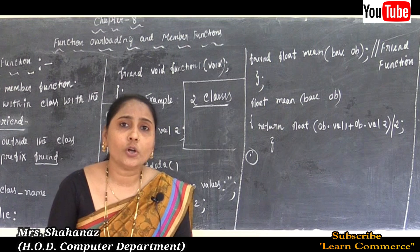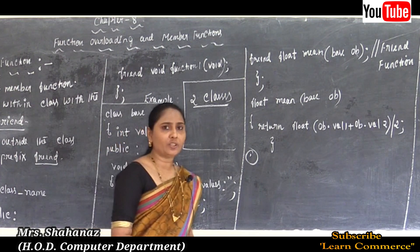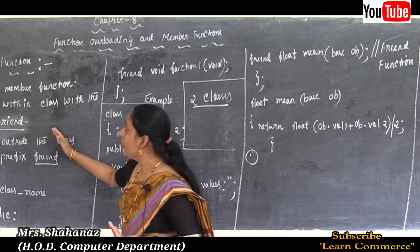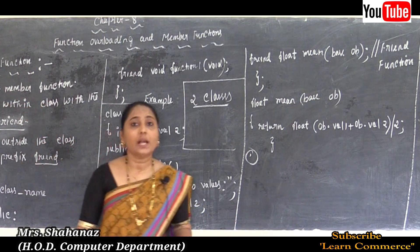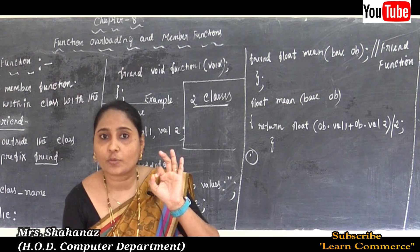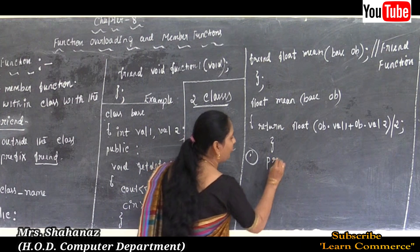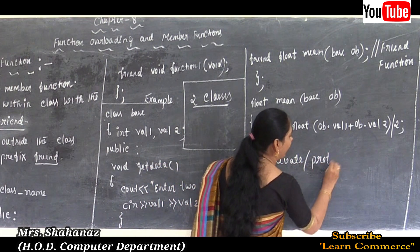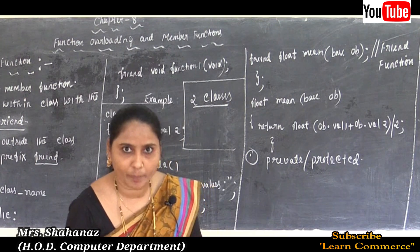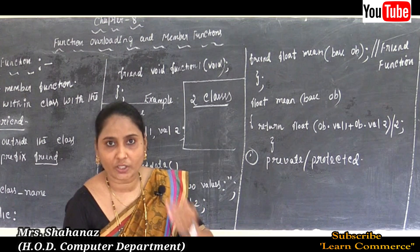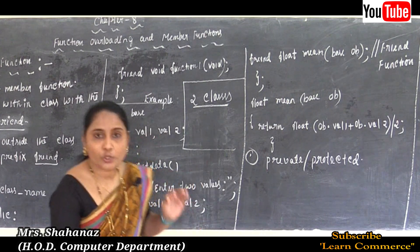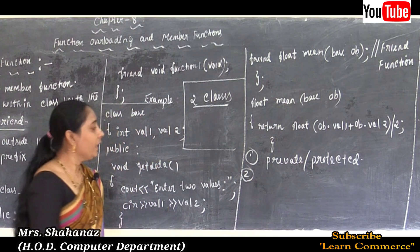Some important notes about the friend function: First, the friend function is a non-member function of a class — it is a friend of the class — and has full access to the private and protected data members of the class. Whatever is declared private or protected can be accessed through the friend function.